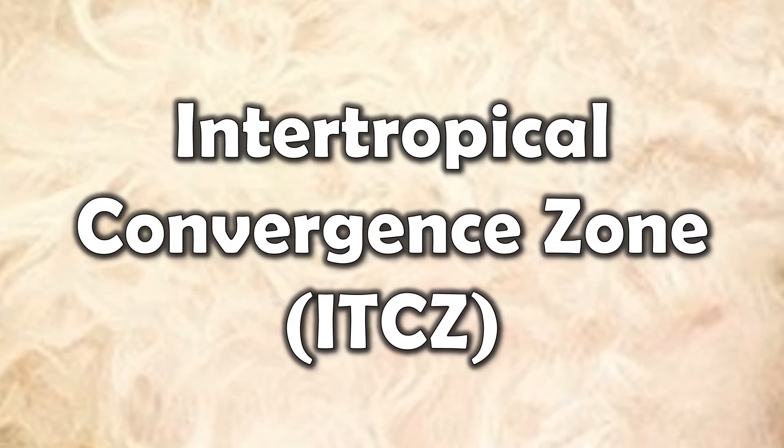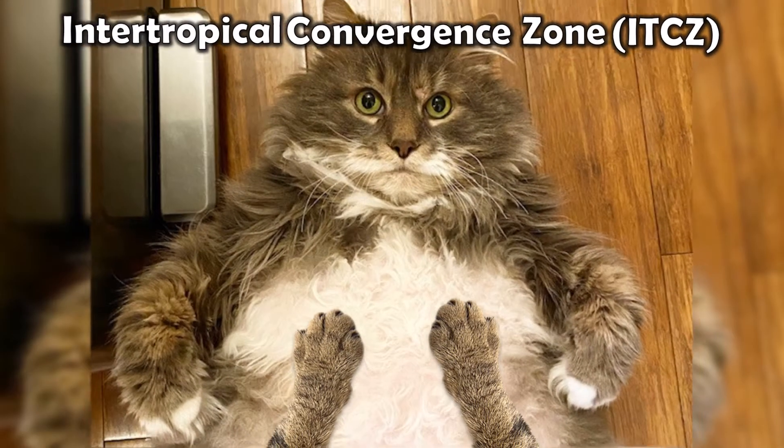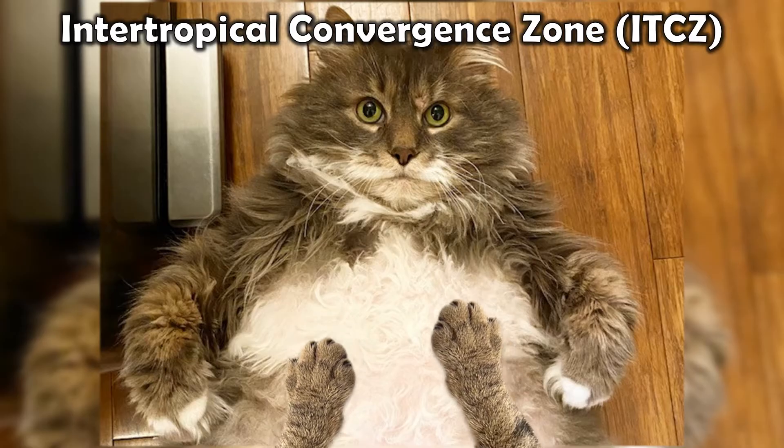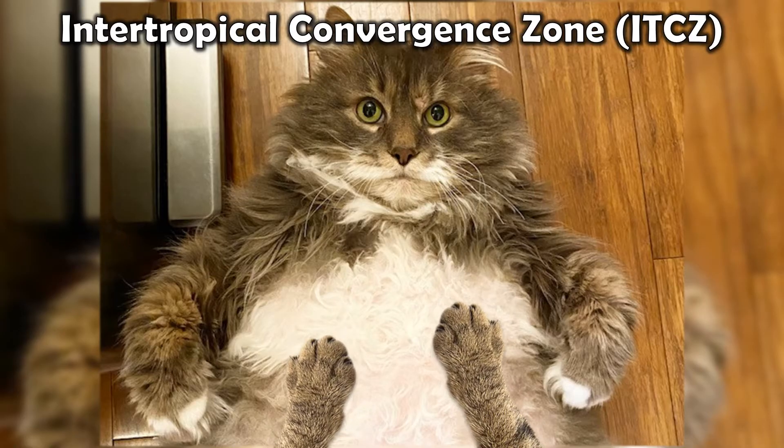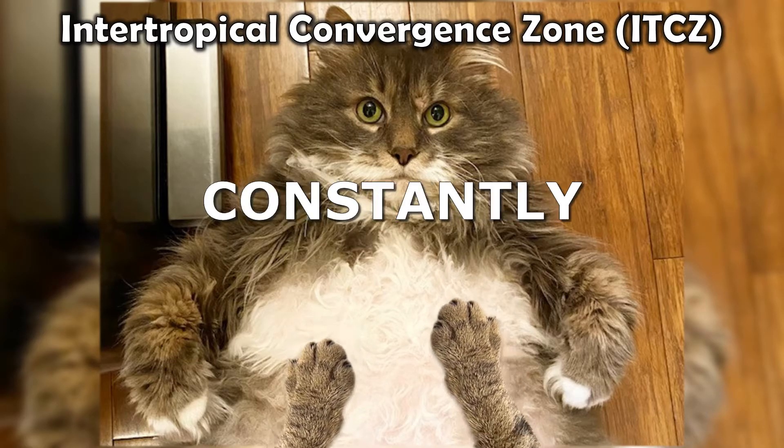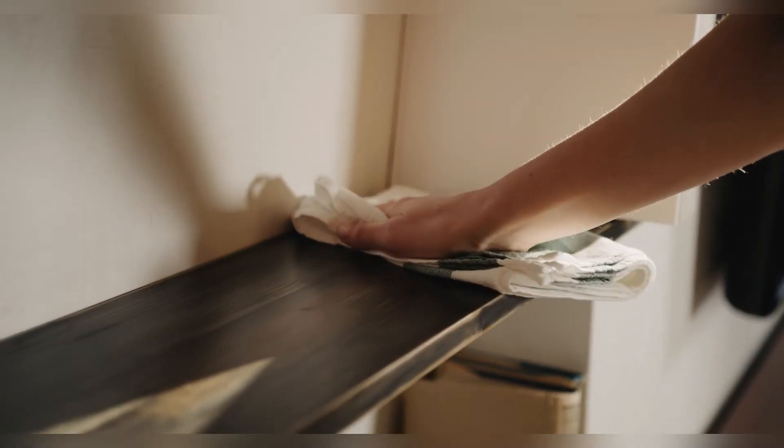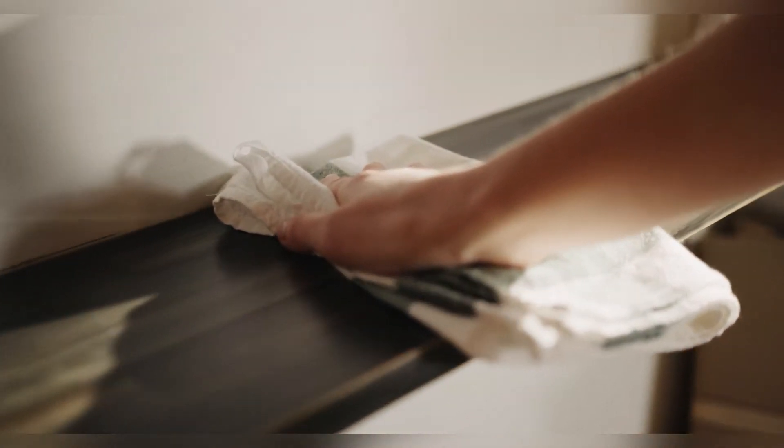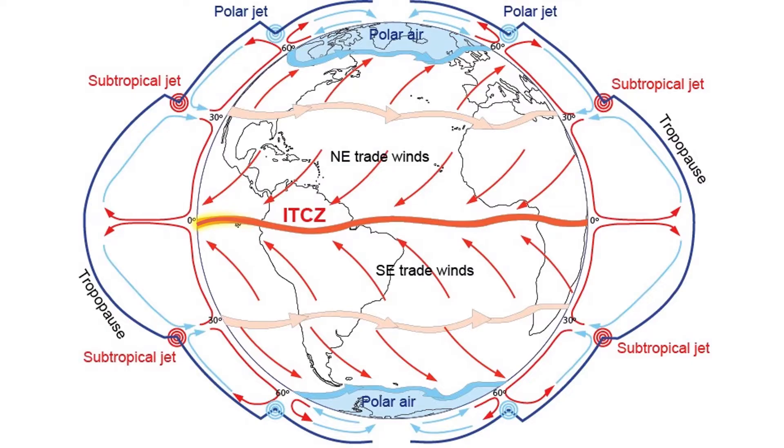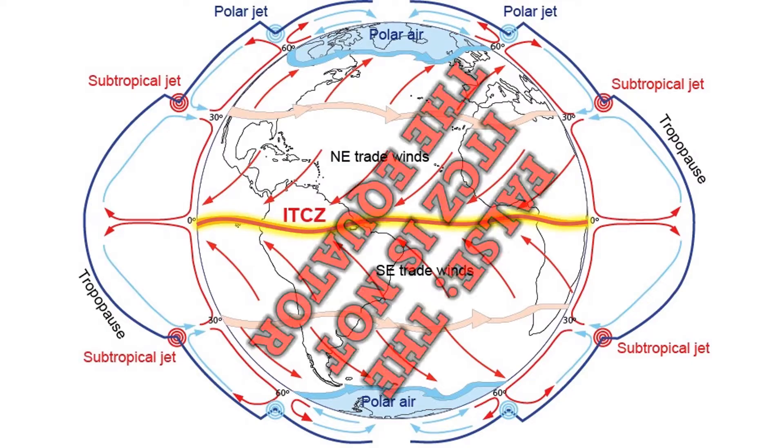The Intertropical Convergence Zone, or ITCZ, pronounced itch, is a major factor in explaining why some areas get humid tropical climates seasonally as opposed to constantly. First, let's clear up a common misconception. It's common to think that the ITCZ is the equator, but this is false.